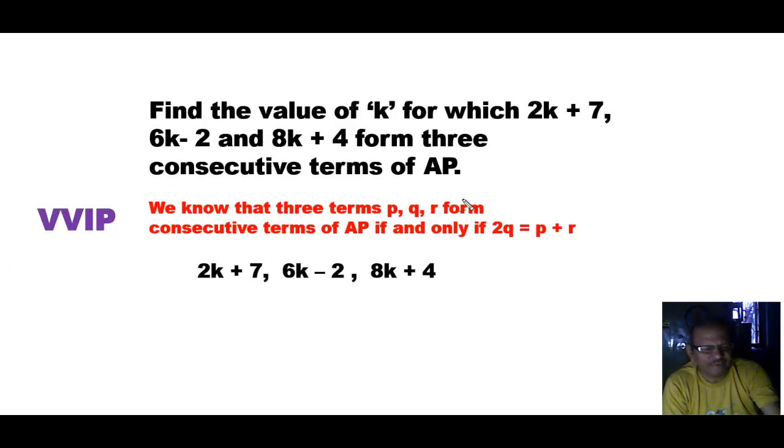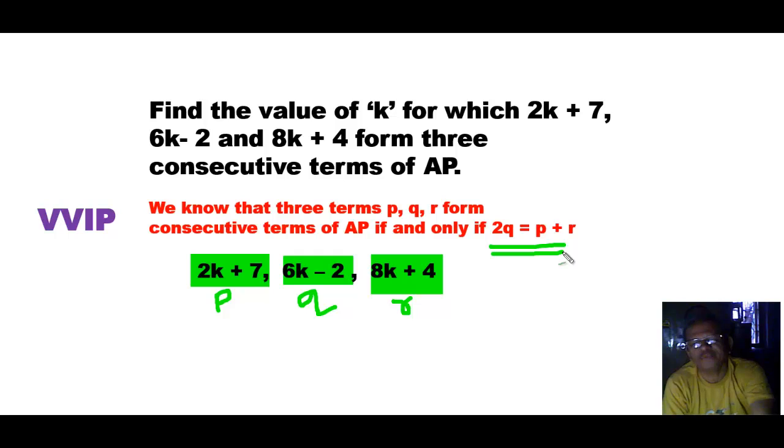2k plus 7, 6k minus 2, and 8k plus 4 are the three terms. So 2k plus 7 is taken as P, this will be Q, and this will be R. Replacing these values here, 2q equals P plus R, and we will see what we get.